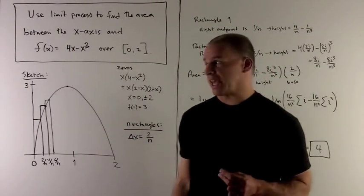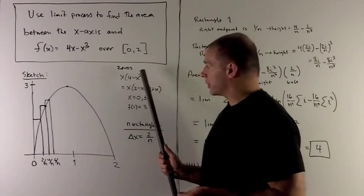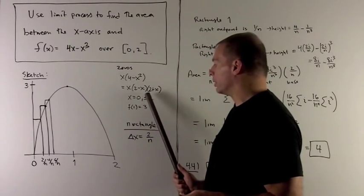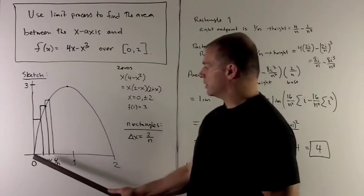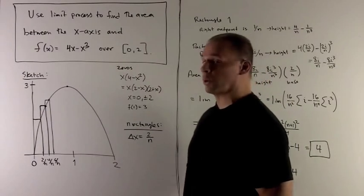So we start off with a sketch. First I'll find the zeros, which wind up being 0 and plus or minus 2. We only need the 0 and the 2, so this is going to wind up having zeros at the endpoints.